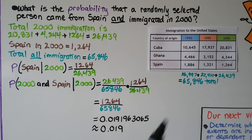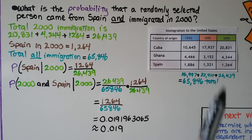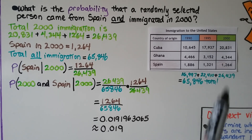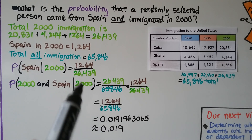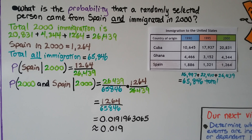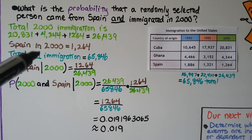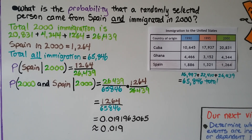We totaled up all of them, totaled up all the 2000 column, and used that information to write our probabilities. We multiplied them because we had an AND. Just remember that when you see this bar, it means 'given that.'